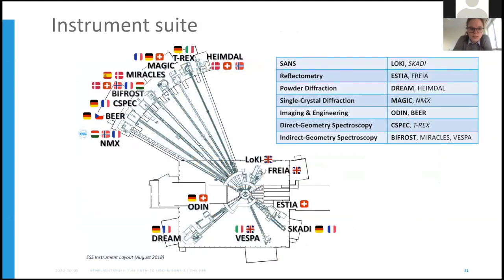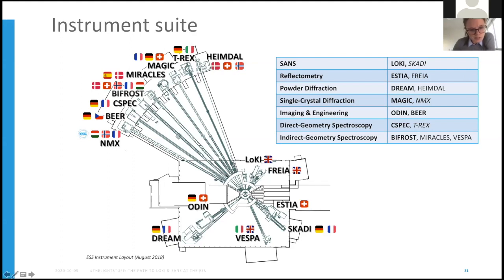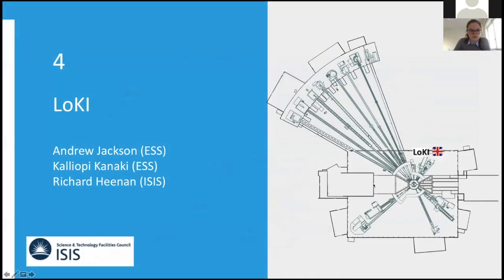Here's a top view of the instrument hall, with the proton beam coming from the right-hand side. The flags from all different in-kind partners contributing to each instrument are visible. Note the varying lengths of the halls — some instruments go up to about 160 meters in length — compared to LOKI and Freya which, sacrificing some resolution but gaining massively in flux, are much shorter, with LOKI going up to about 30 meters. LOKI was designed by Andrew Jackson, Kelly Kanaki at ESS, and Richard Heenan at ISIS, and I joined the project a couple of years ago.